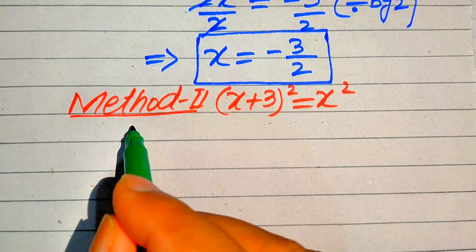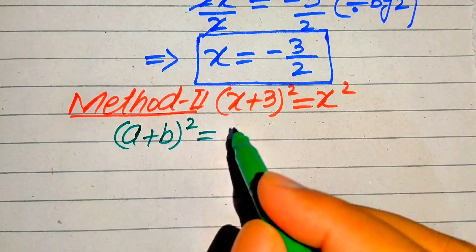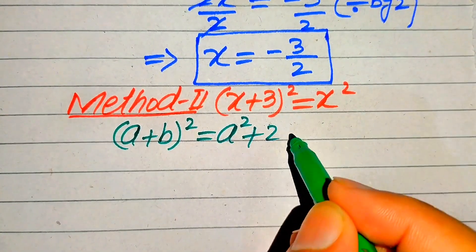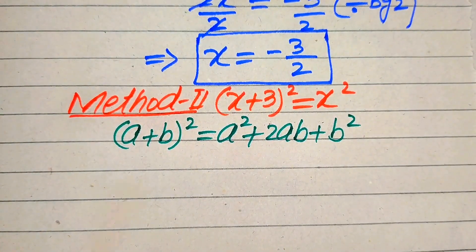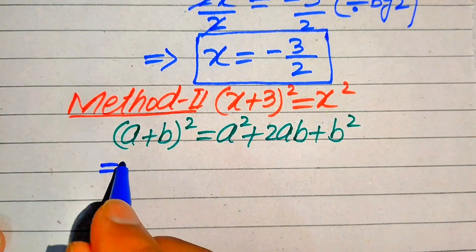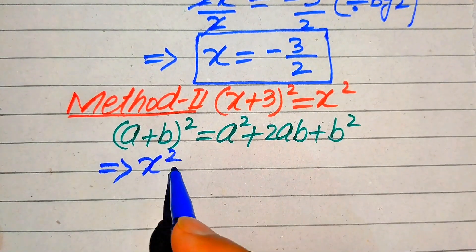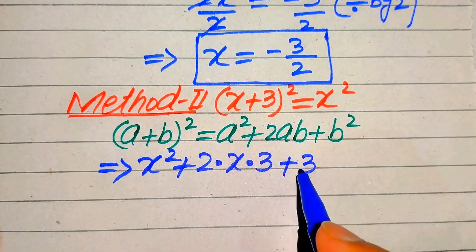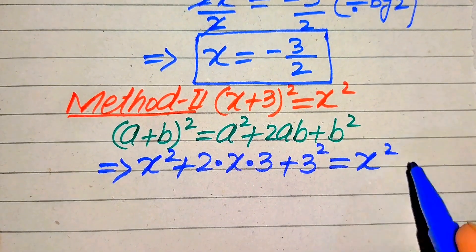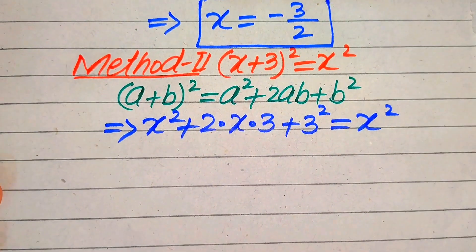In Method 2 we apply a different algebraic formula: (a + b)² = a² + 2ab + b². We apply this formula to the left hand side of the equation, expanding (x + 3)² as x² + 2·x·3 + 3² equals x².